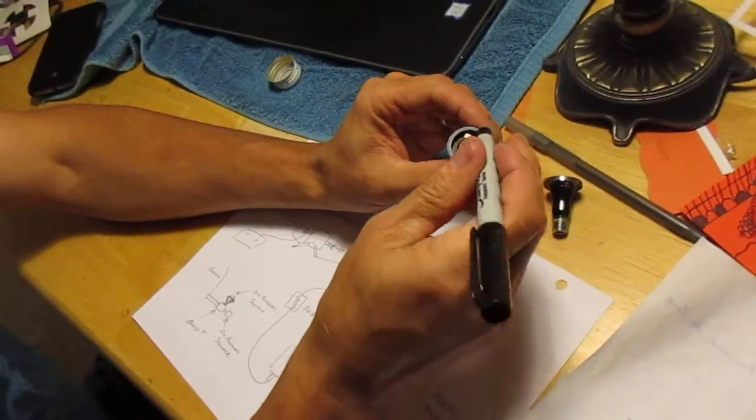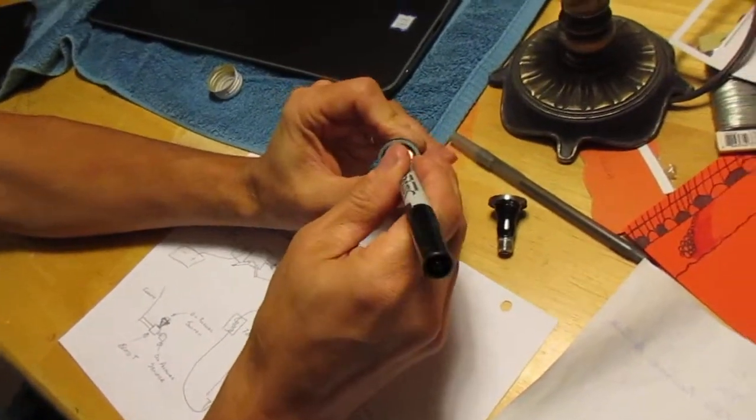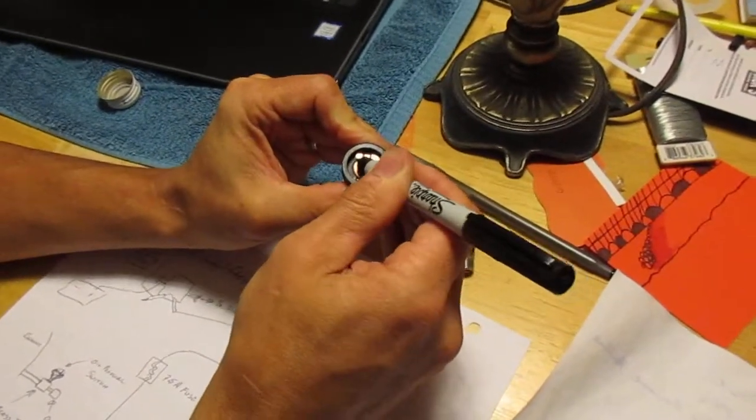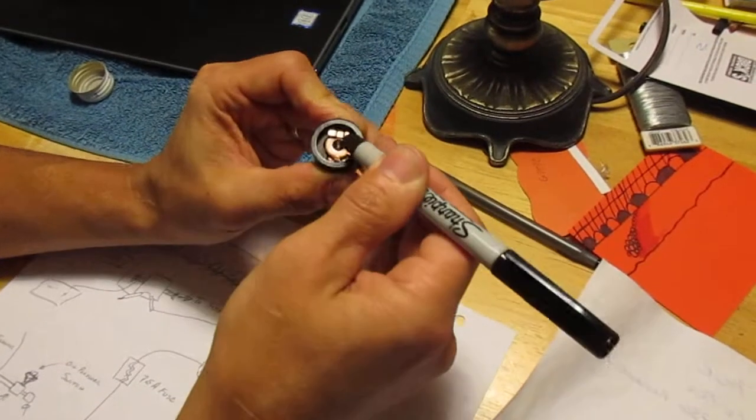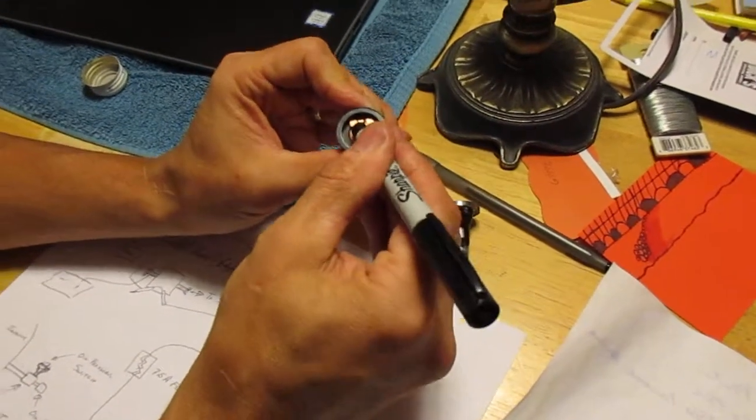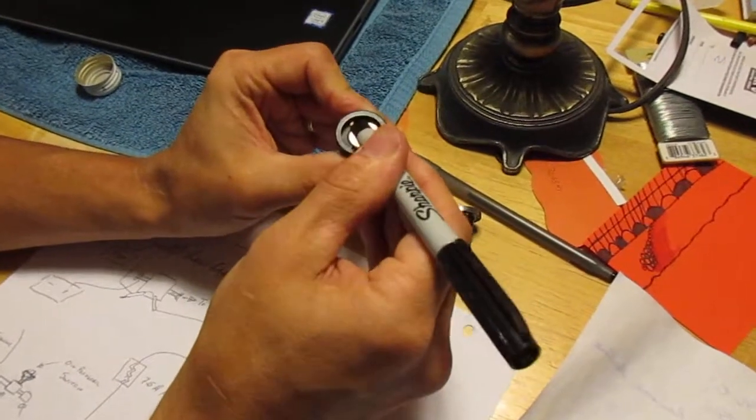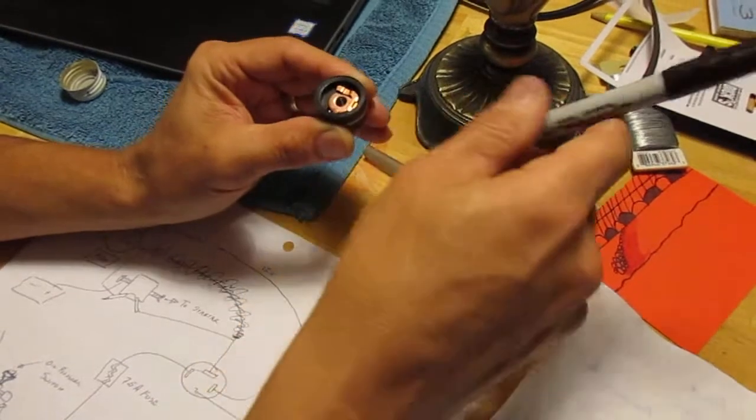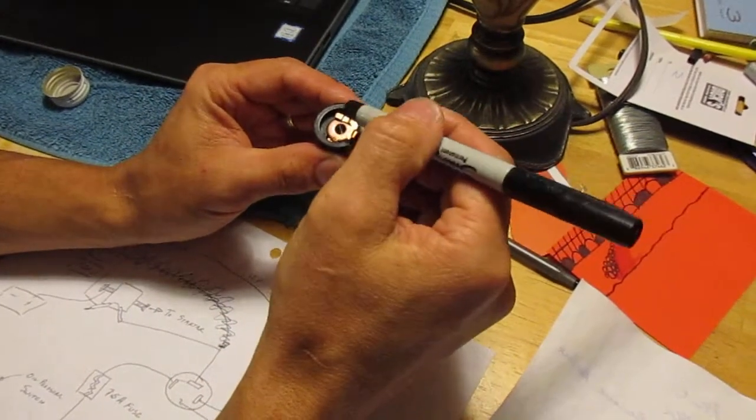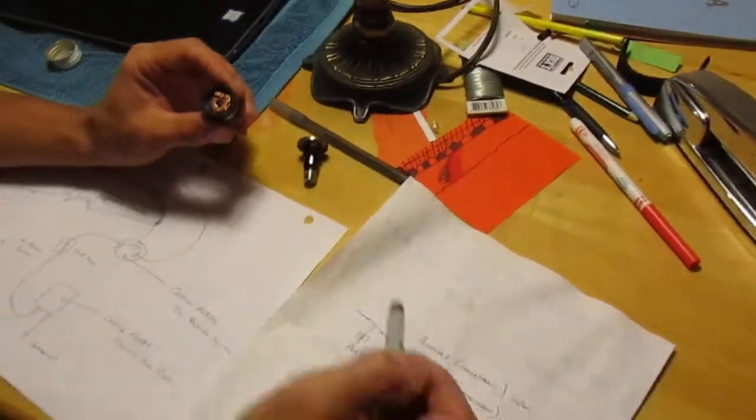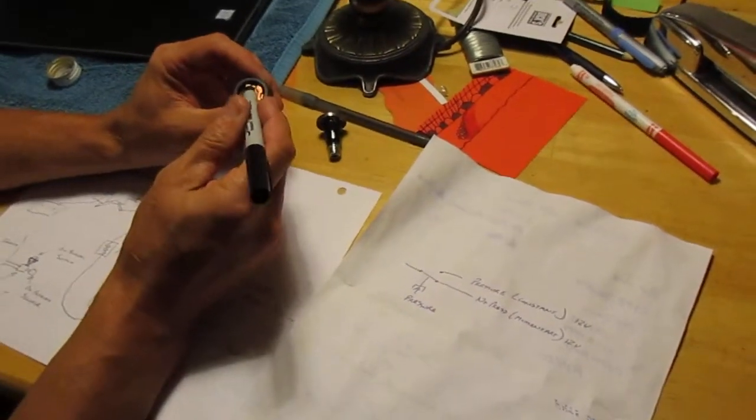So you're literally just moving this copper washer from one contact to the next. And again, that means for a split second it actually turns the pump off for a split second. So that's how that works. There's no way the current can come back through the circuit—these won't be connected at the same time.